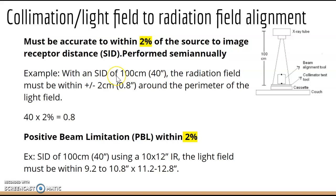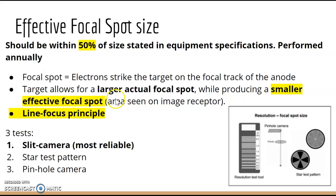PBL — Positive Beam Limitation — is when you insert a 10x12 cassette in a Bucky and the light automatically opens to 10x12. That's within 2%, same as the collimation tolerance. Effective focal spot size should be within 50% of what the equipment specifications stated.